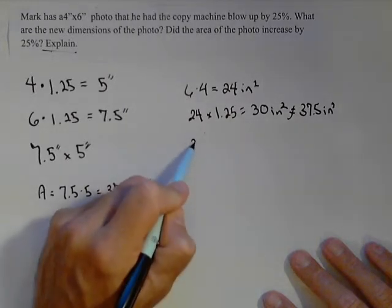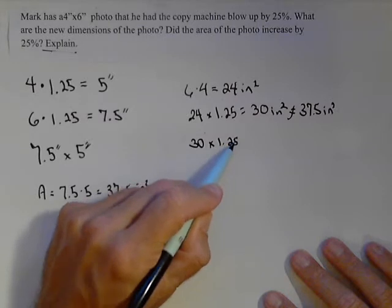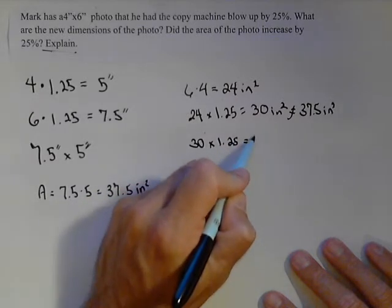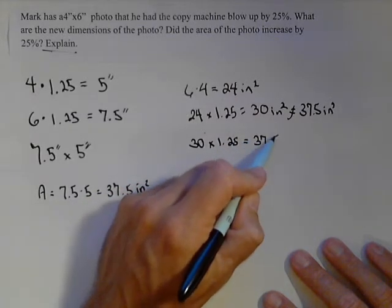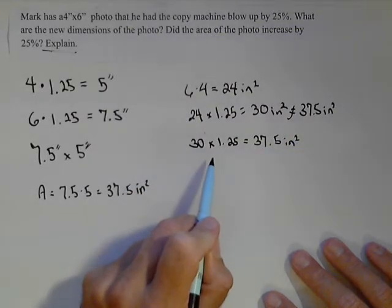If we were to take 30 and multiply it by 1.25, we would actually get 37.5 square inches. Well, let's think about why this is happening.